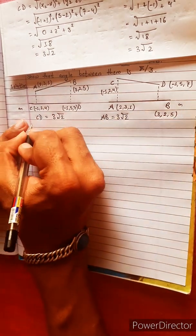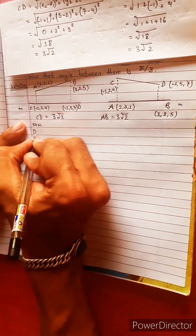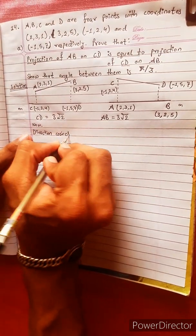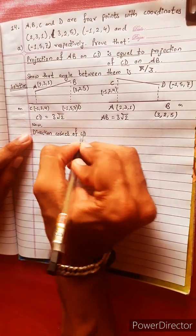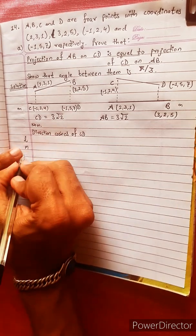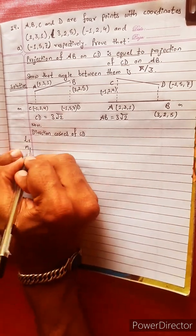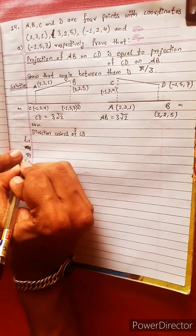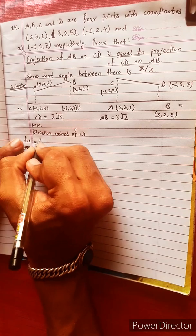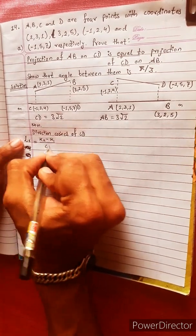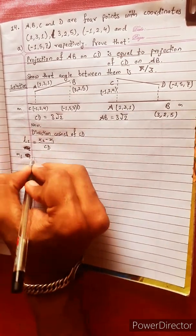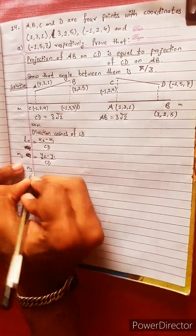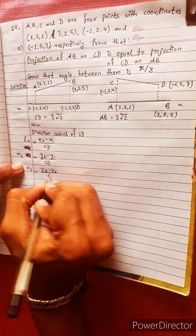Now we find the direction cosines of CD. This is direction N. The formulas are: L1 = (X2 − X1) / CD, M1 = (Y2 − Y1) / CD, N1 = (Z2 − Z1) / CD. This is step 1 and step 2 of the formula.